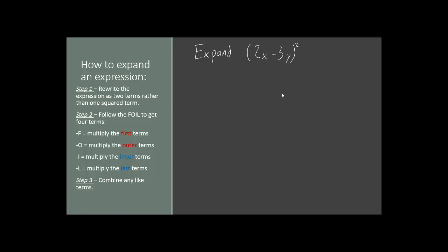The problem here is to expand the quantity 2x minus 3y, squared. Now, if you didn't know the FOIL Method, here's what you might be tempted to do.